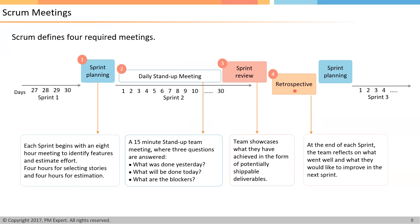This is in brief about all the events that take place within a Sprint. If you have any questions, please ask. If you don't have any doubts, can we practice some questions on the Scrum framework so that we can validate our understanding on Scrum?